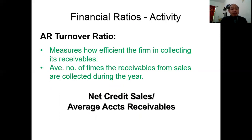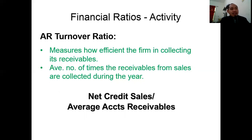Accounts receivable turnover ratio measures how efficient the firm is in collecting its receivables. Sometimes a company will sell items and forget to collect receivables, which is very important because it affects your cash flow. This is the average number of times receivables from sales are collected during the year. The formula is: net credit sales divided by average accounts receivable. For examinations, always use 365 days unless otherwise stated.